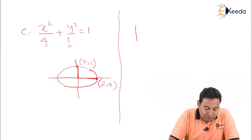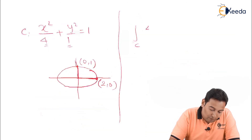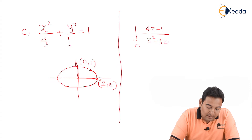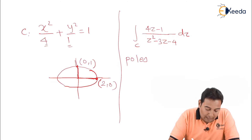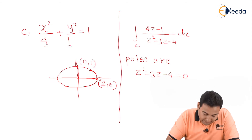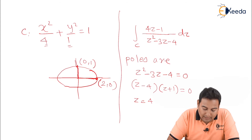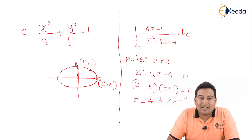Now let us start solving the problem and check which point is lying inside and which is lying outside. The integral is ∮ (4z − 1) / (z² − 3z − 4) dz. First we need to identify the poles by equating the denominator to zero: z² − 3z − 4 = 0, which factors as (z − 4)(z + 1) = 0. So the poles are z = 4 and z = −1.